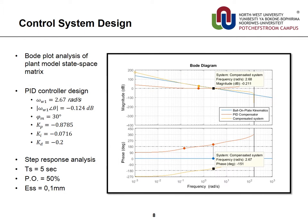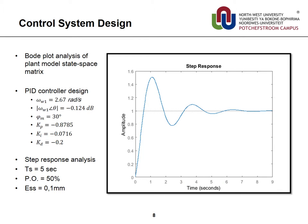By doing a frequency analysis of this state space matrix, a PID controller can be designed by choosing an operating frequency near the gain crossover frequency of the state space matrix and a desired phase margin of 30 degrees. A stable controller with the following transient response was obtained.